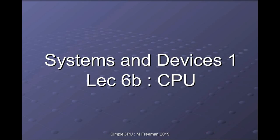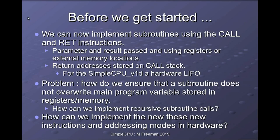Welcome to System Devices 1, Lecture 6b: the CPU, where we continue to look at how we can use and improve our processor. In the previous lecture we saw how we could implement subroutines using call and return instructions. Using this mechanism we can write a block of code to implement a particular function, then pass parameters to it and return results using memory — either internal registers or external SRAM. We also saw how we could implement the call/return stack, storing the return address using a simple stack built from a LIFO buffer.